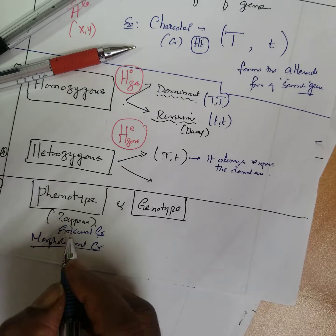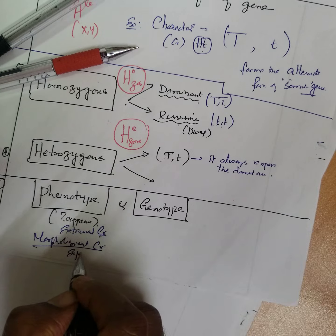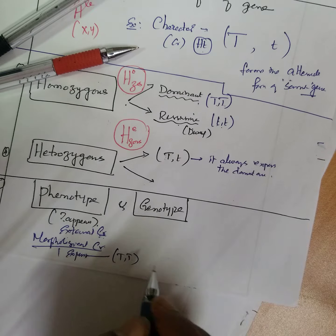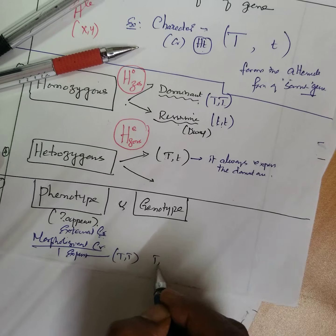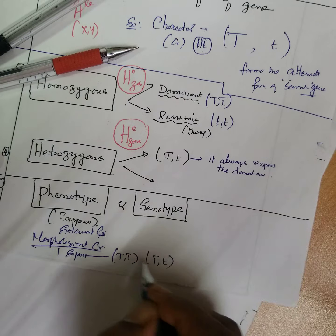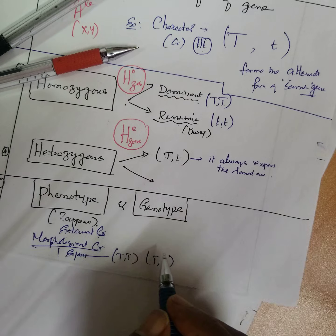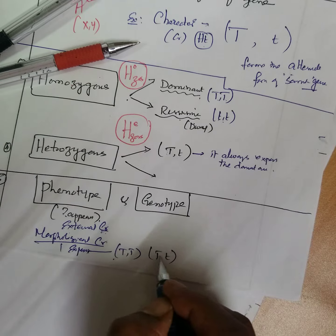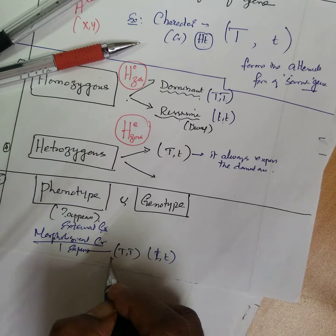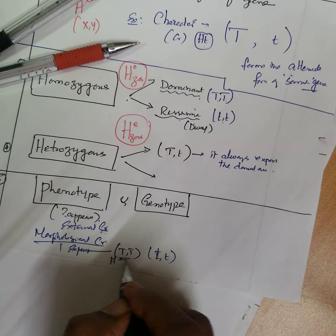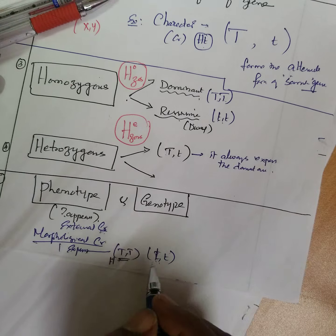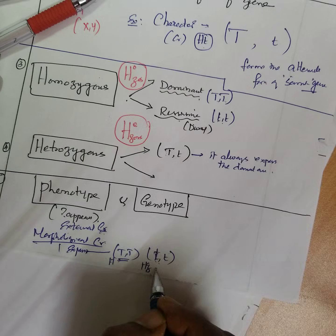Expressing the character like tall or dwarf that you can see. Both are homozygous tall, this is homozygous dwarf.